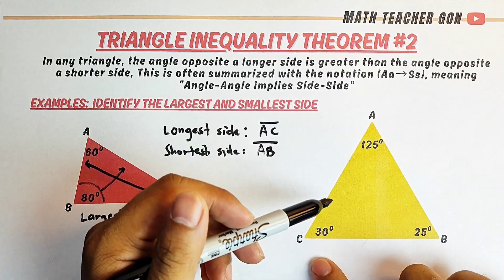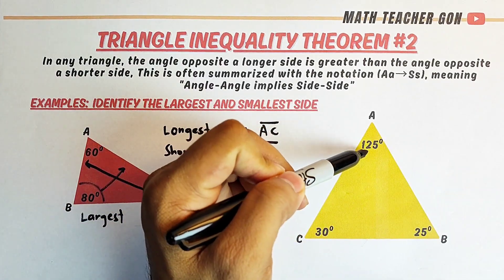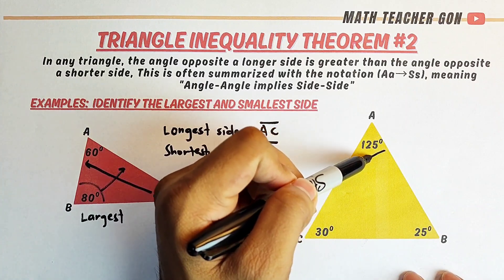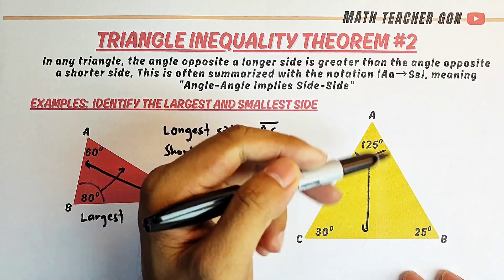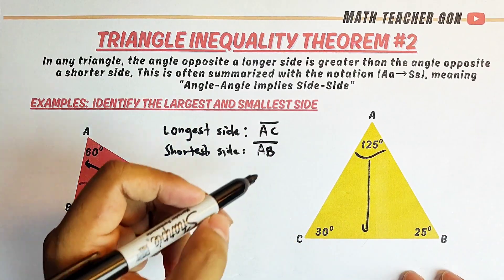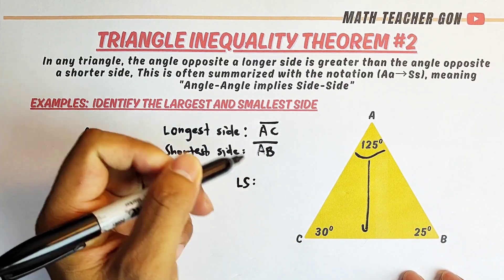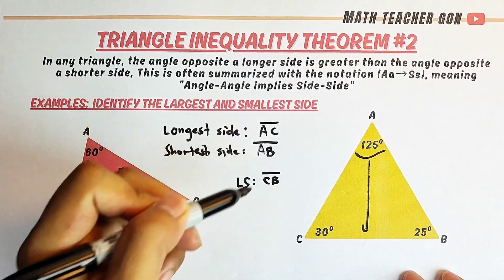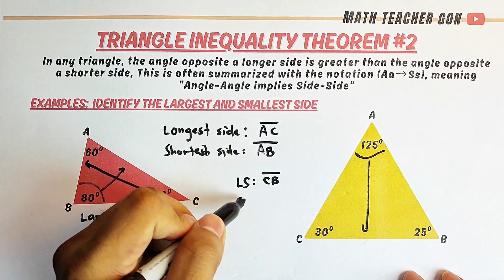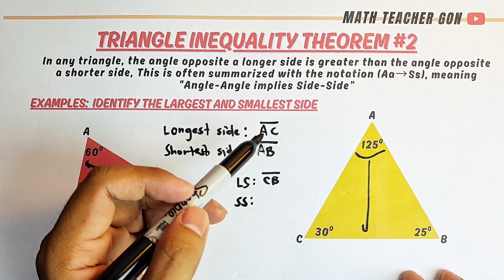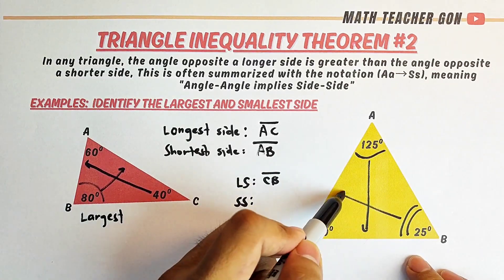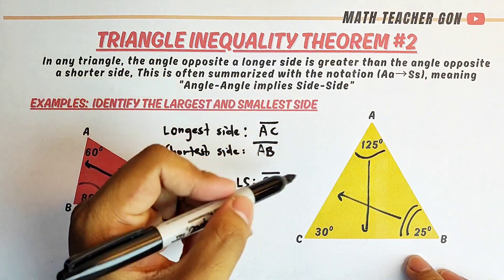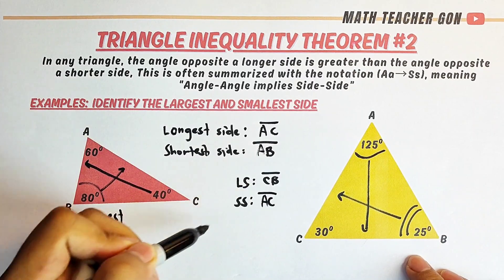For the second triangle, we have 30 degrees, 25 degrees, and 125 degrees. The largest angle is angle A at 125 degrees, so the side opposite to it — side CB — is the longest side. Comparing 30 and 25 degrees, 25 degrees is the smallest angle, so side AC opposite to it is the shortest side.